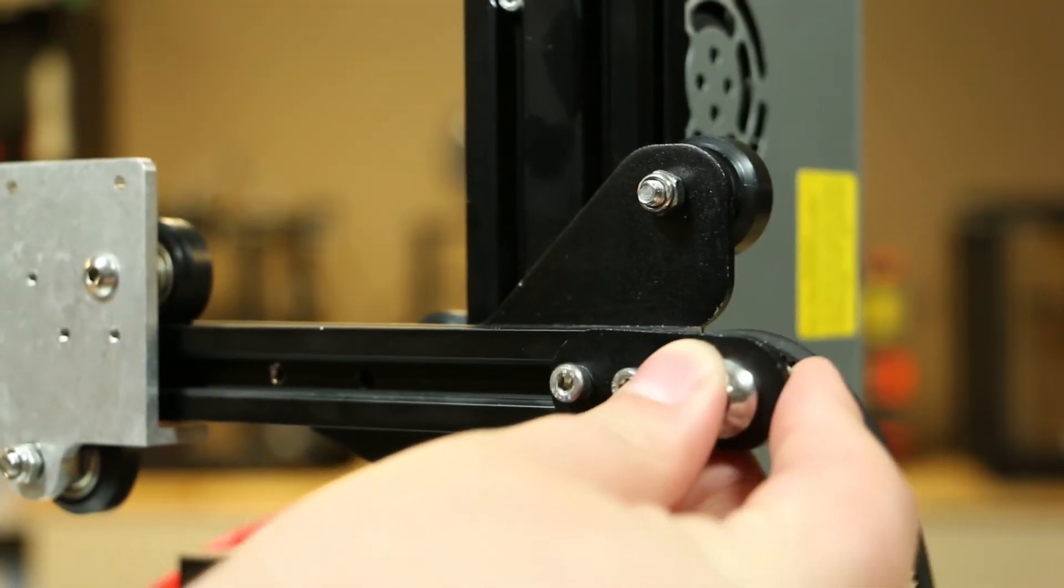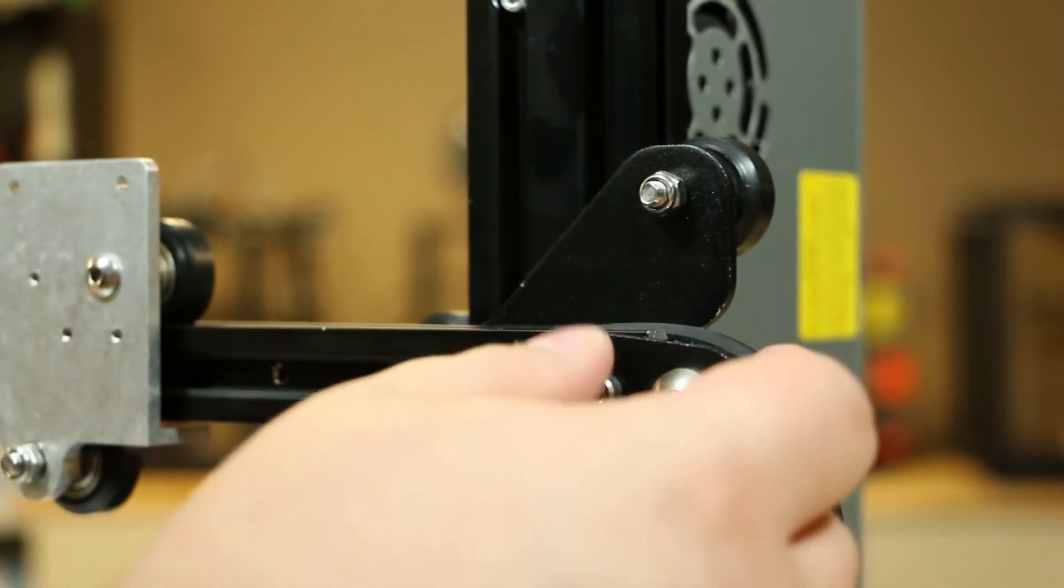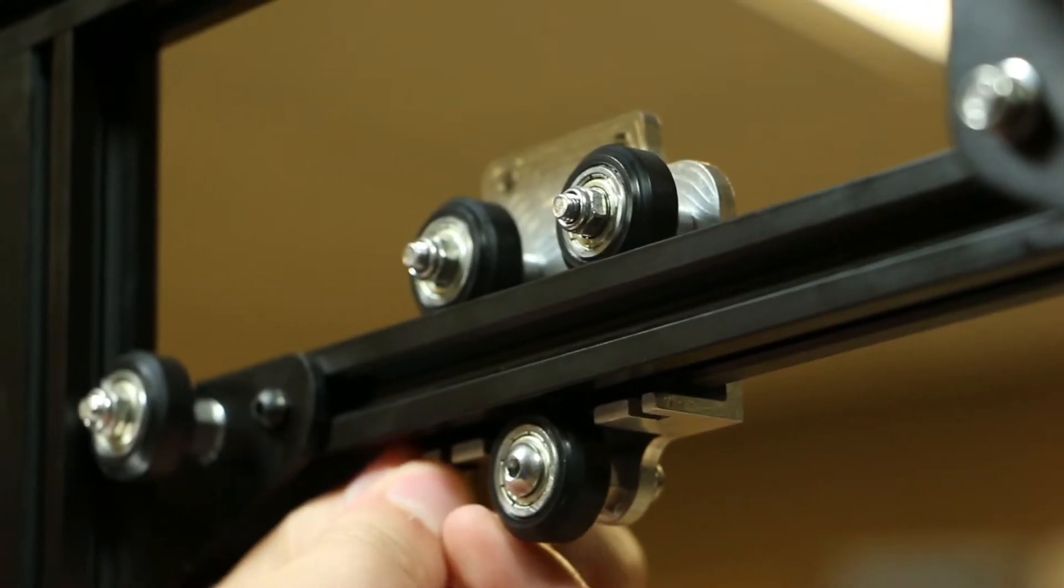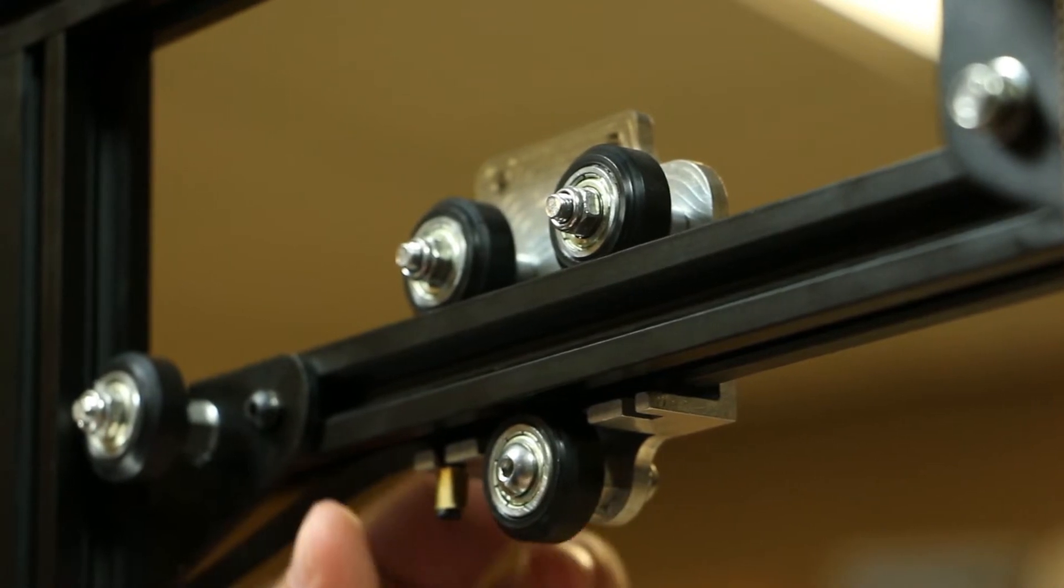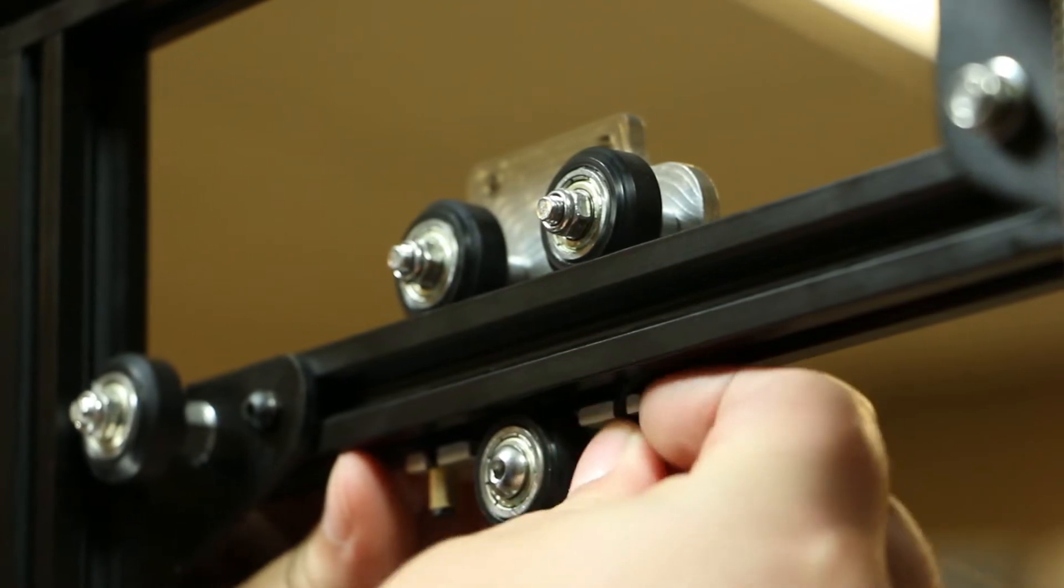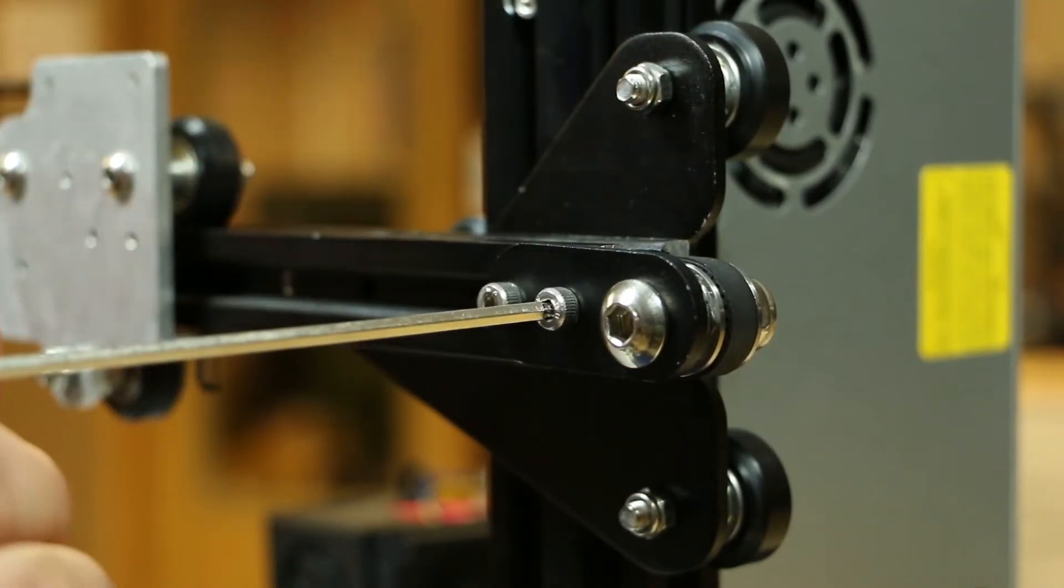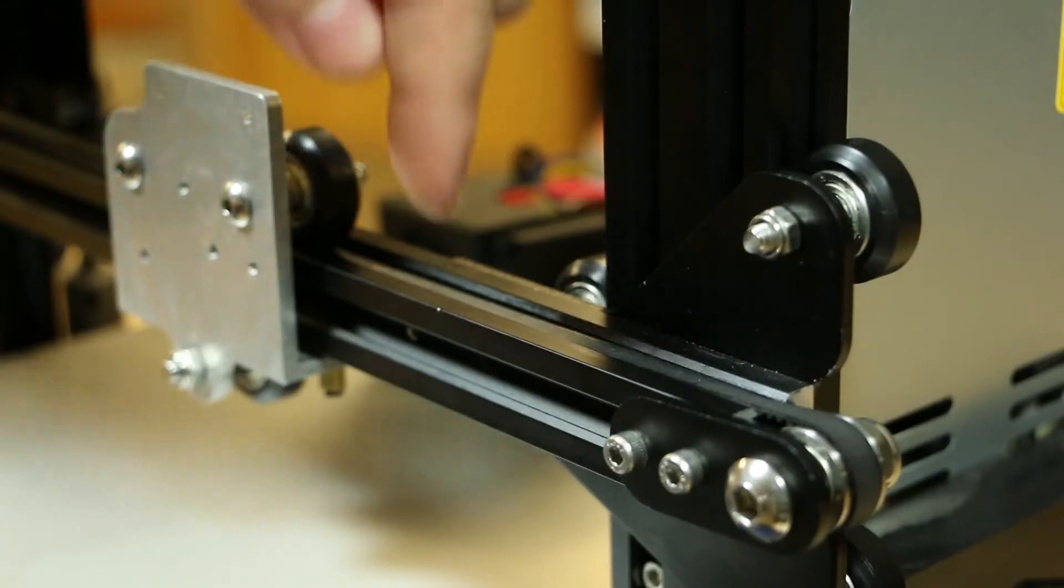Now, reattach the belt tensioner slash idler. Make sure the smooth side of the belt is facing out. Slide the belt into the carriage's holder. Do not twist the belt. Use the 2mm Allen wrench to tighten the belt tightener. Then, test the belt.